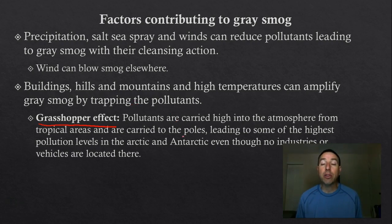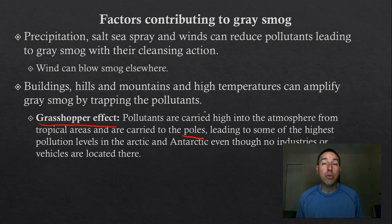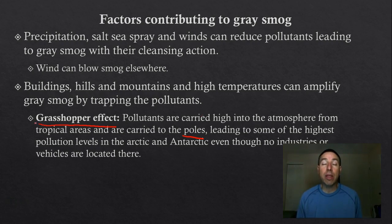One of the places they're really starting to affect is the poles. If you look at the world's wind currents, they tend to push most of the atmosphere eventually toward the poles, making the poles a huge collection spot for air pollutants. So we're getting a lot of air pollution in areas where people don't even live, carried there by wind from all around the globe.